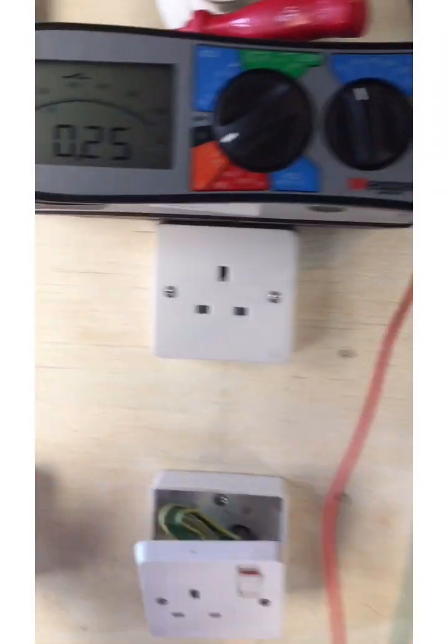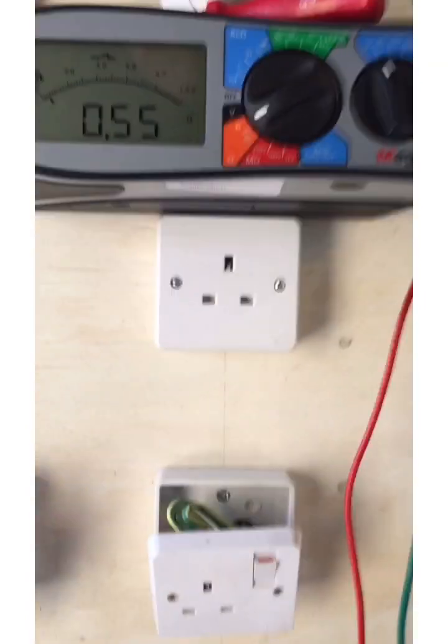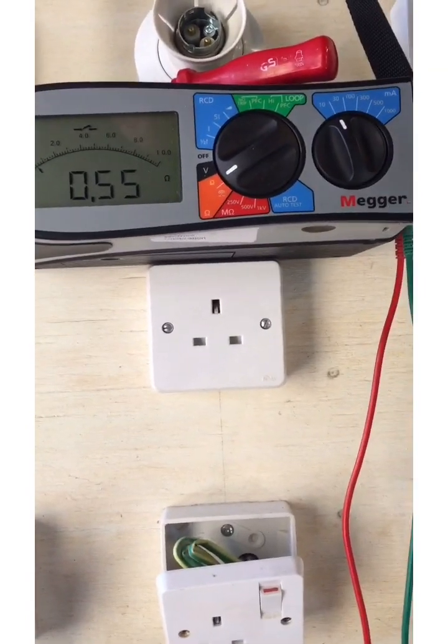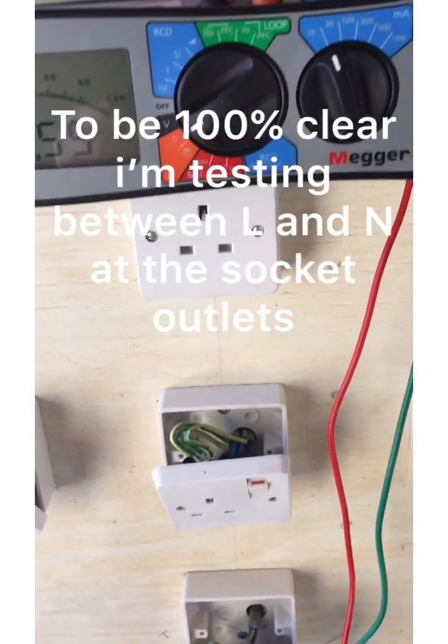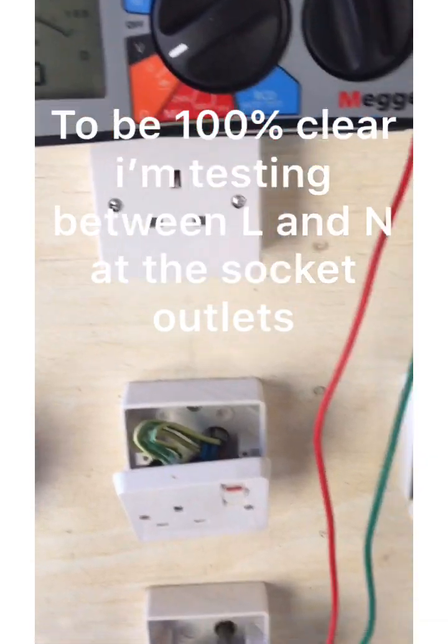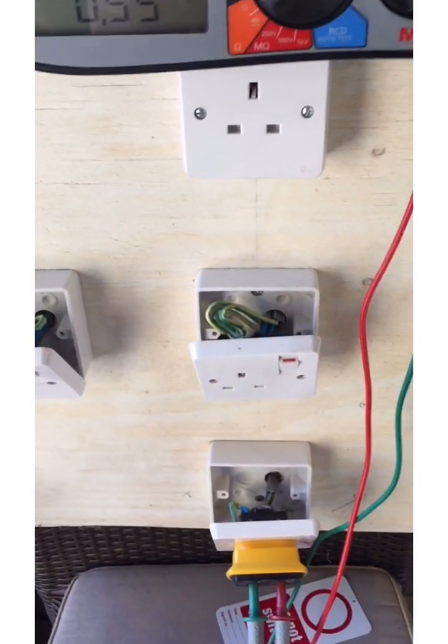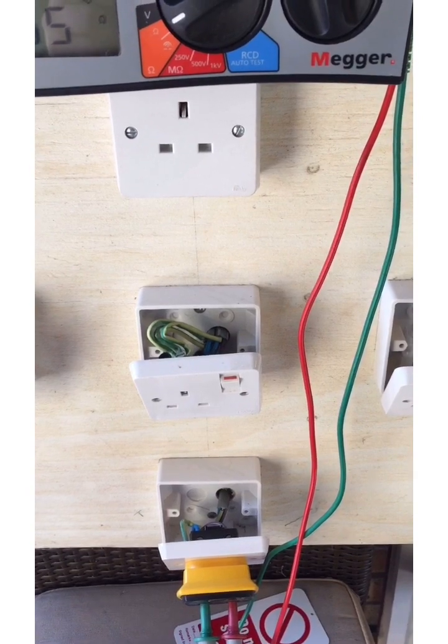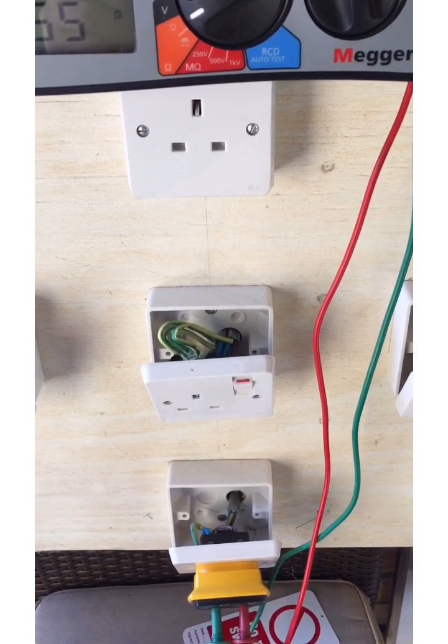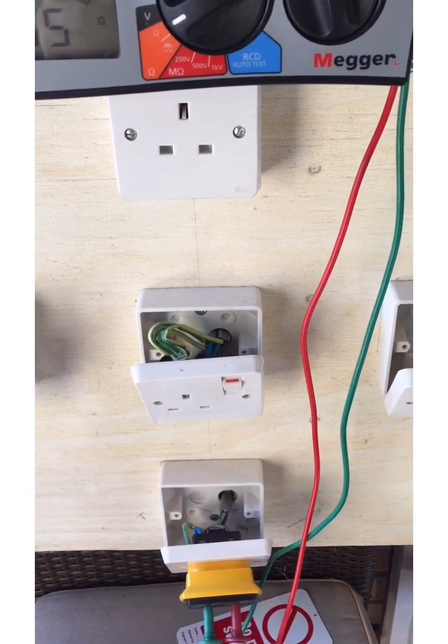Now if I go to the spur, what am I getting here? I'm getting 0.55, now I've got 0.58 before. Again, there or thereabouts. That's what we expect. We expect that the values across the ring main to be consistent and any spurs to have higher values. And it's the highest value which is going to come from a spur which we record.